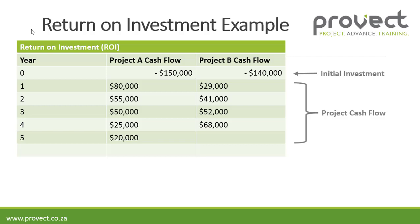And the same for project B — we've got an initial investment of $140,000 with the cash flow for years 1, 2, 3, and 4.